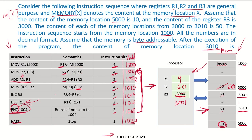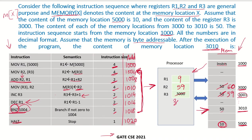Now we load from M[R3] into R2 again. R3 is now 3001 and M[3001] = 50, so R2 gets 50. Then ADD R1 + R2: 9 + 50 = 59, so R2 = 59. R2 is then stored to M[3001], so M[3001] = 59. R3 is incremented to 3002, and R1 is decremented to 8.